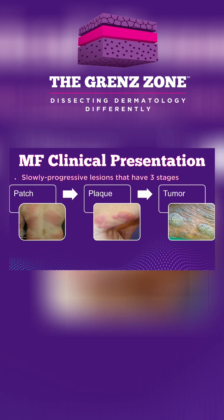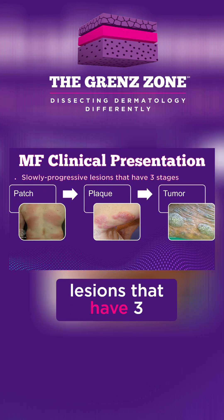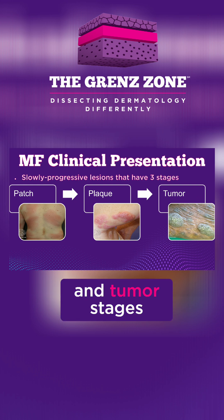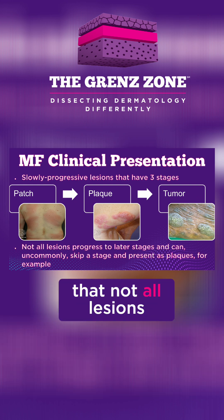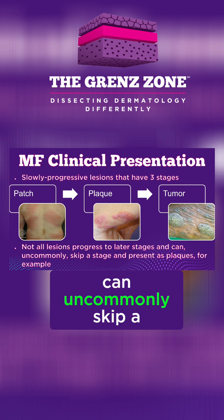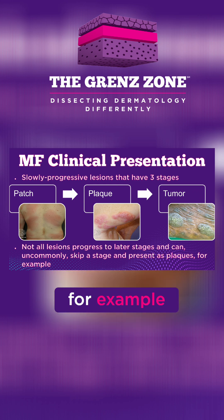MF consists of slowly progressive lesions that have three stages: patch, plaque, and tumor stages. It is important to remember that not all lesions progress to later stages, and they can uncommonly skip a stage and present as plaques, for example.